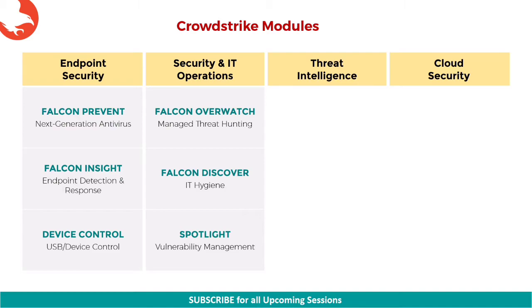The second module is Falcon Discover, which is the module for IT hygiene. This module provides the awareness to identify who and what is on your network, allowing you to address potential blind spots in your security architecture to defend against attacks. This is accomplished with Discover's three key capabilities, that is, application inventory and management. The third module is Falcon Spotlight, which is the module for vulnerability management. This offers a real-time assessment of vulnerability exposure on endpoints, and its native integration into the CrowdStrike Falcon platform enables customers to operate vulnerability assessment within a complete endpoint protection framework.